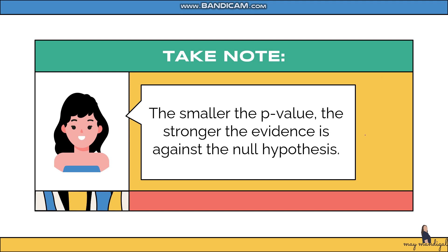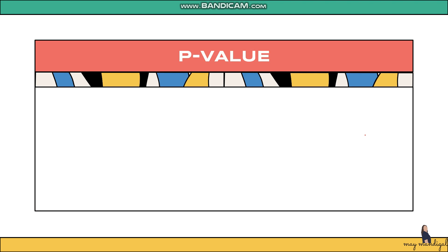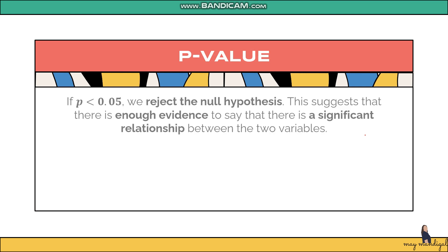The smaller the p-value, the stronger the evidence is against the null hypothesis. If the p-value is small, there is also a small probability that the null hypothesis is true. To know whether the p-value is small enough to reject the null hypothesis, we compare it to our alpha. If the p-value is less than 0.05, we reject the null hypothesis.